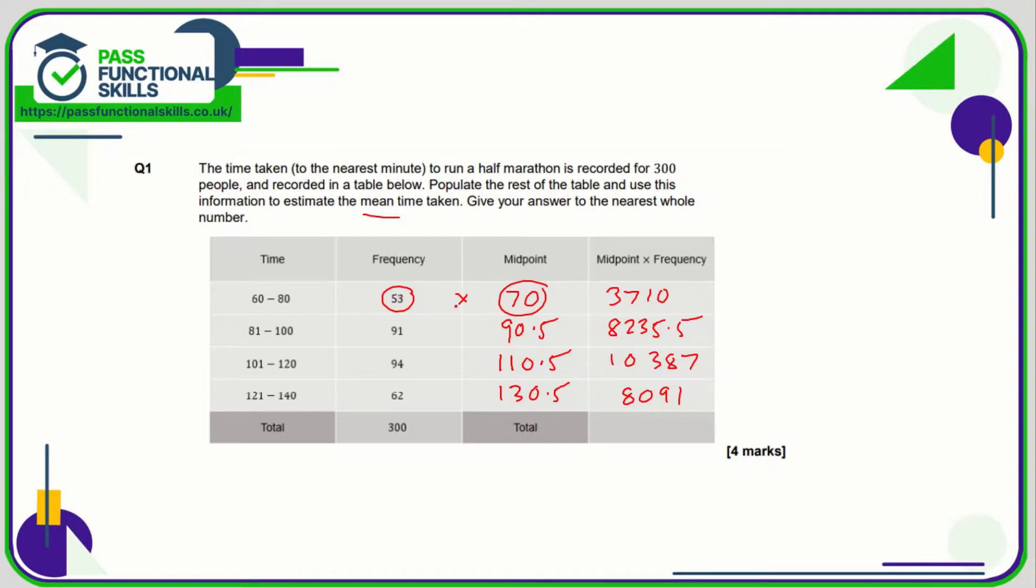Now the total time for these 53 people is going to be 53 lots of 70 minutes. So that is why we're getting this number here. This is the total time for these 53 runners. This is the total time for these 91 runners who we are all assuming ran it in 90 and a half minutes.